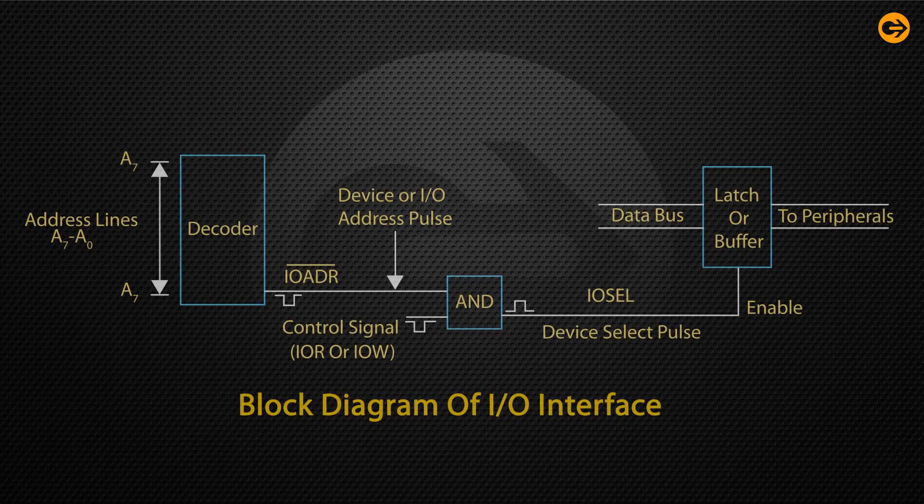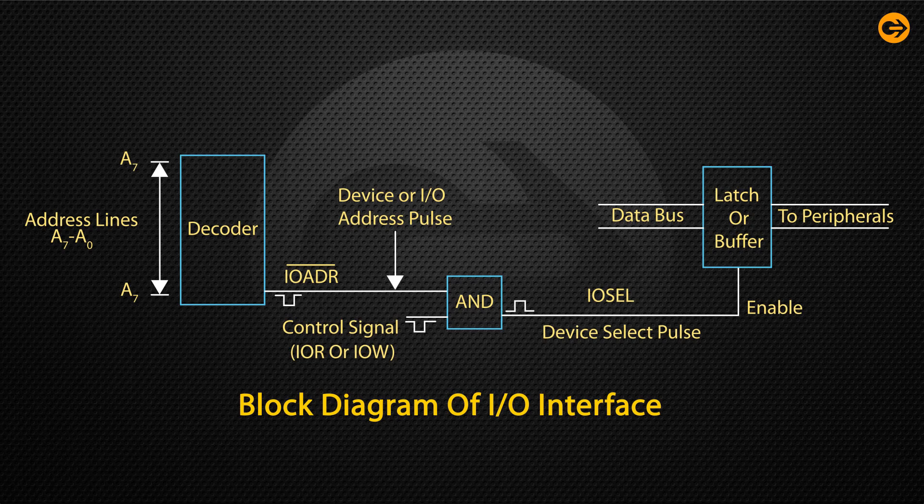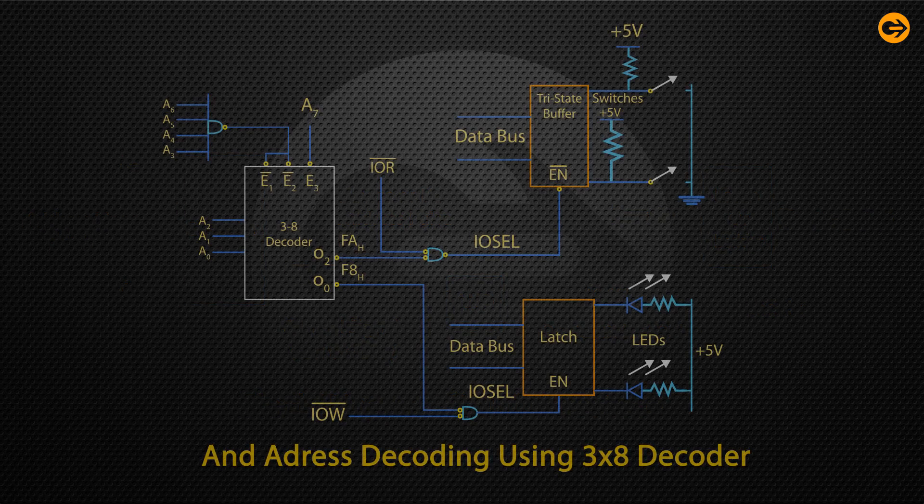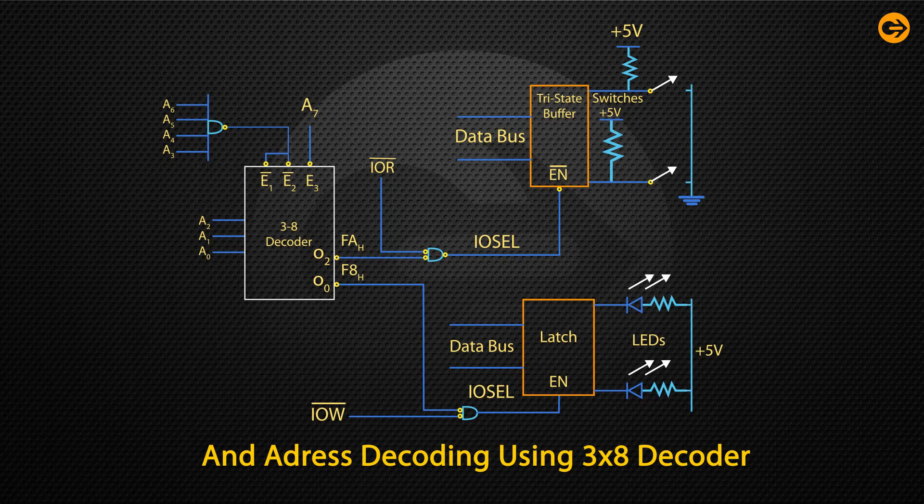In the previous segment, we discussed about the block diagram of I/O interface and a brief about interfacing I/O device. Here we will mainly discuss about the interfacing I/O device using decoders.